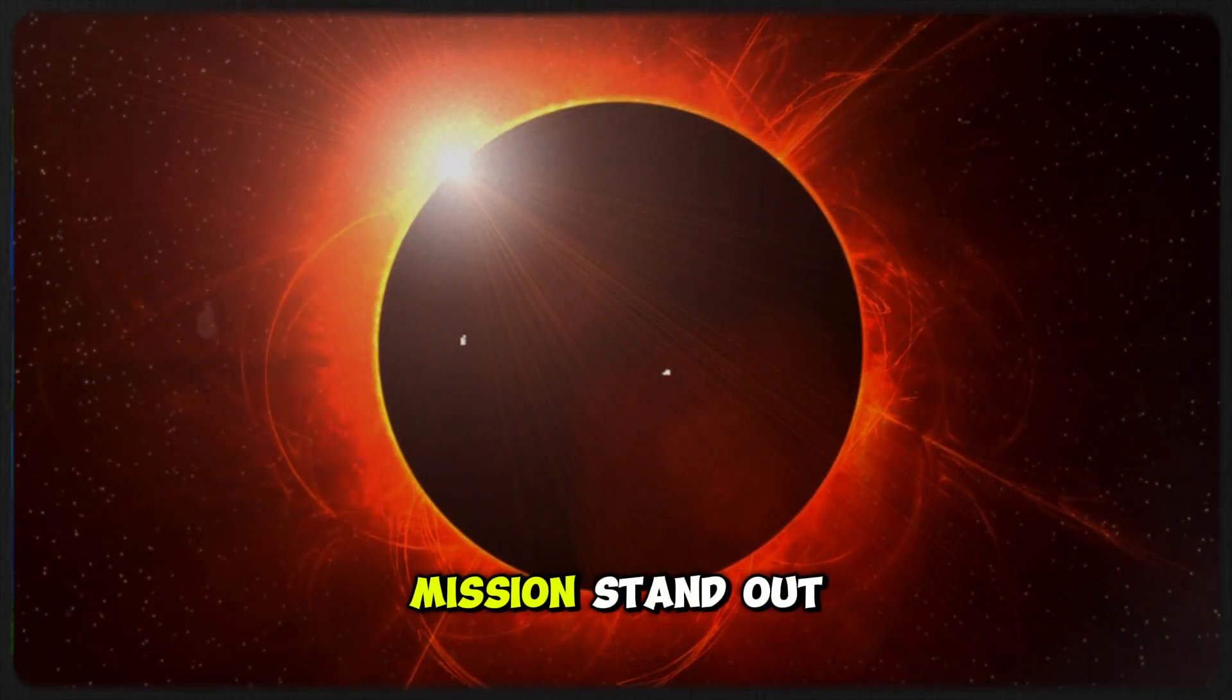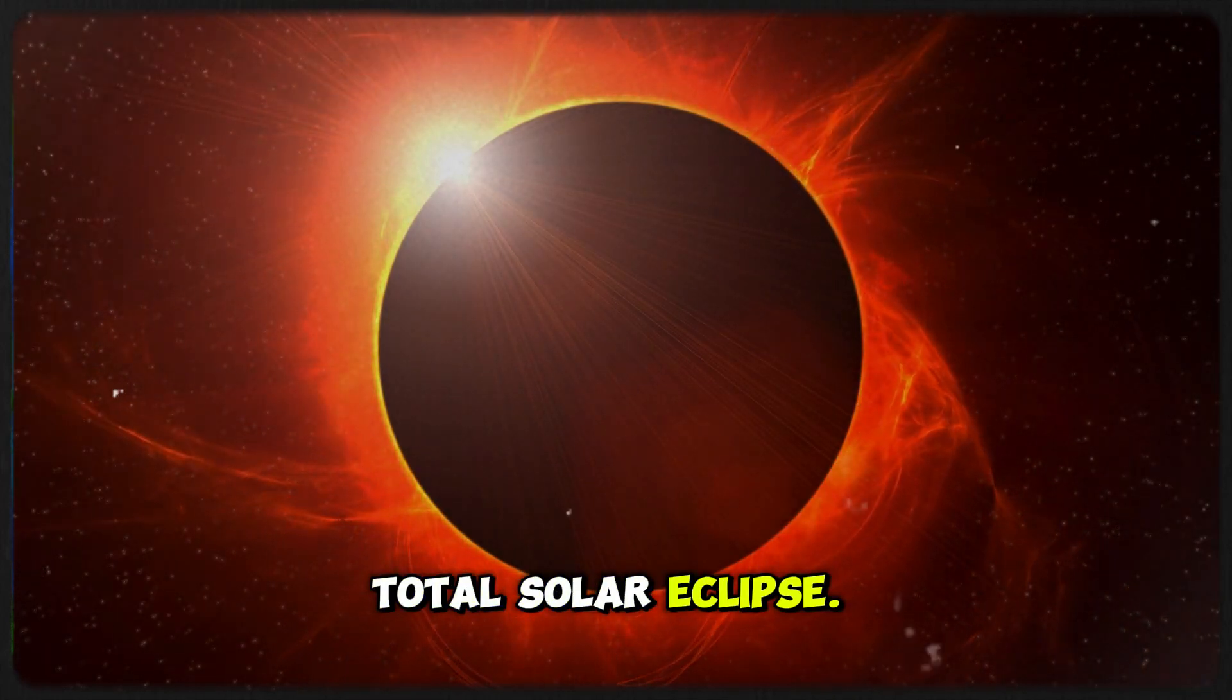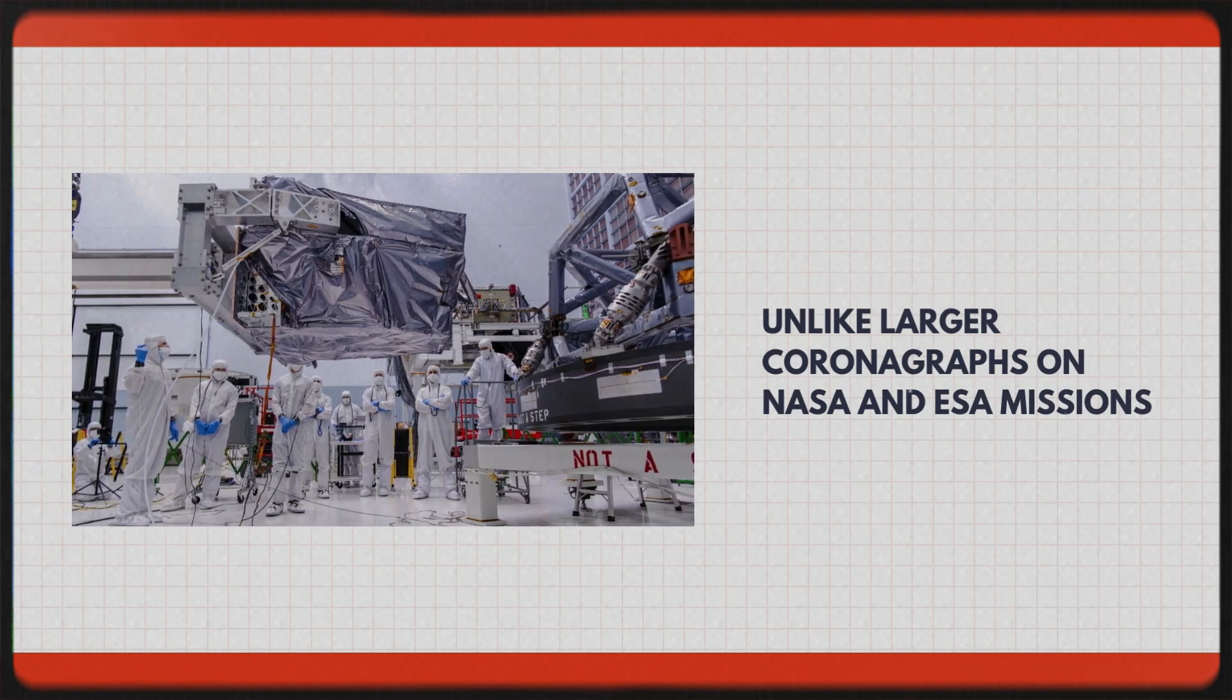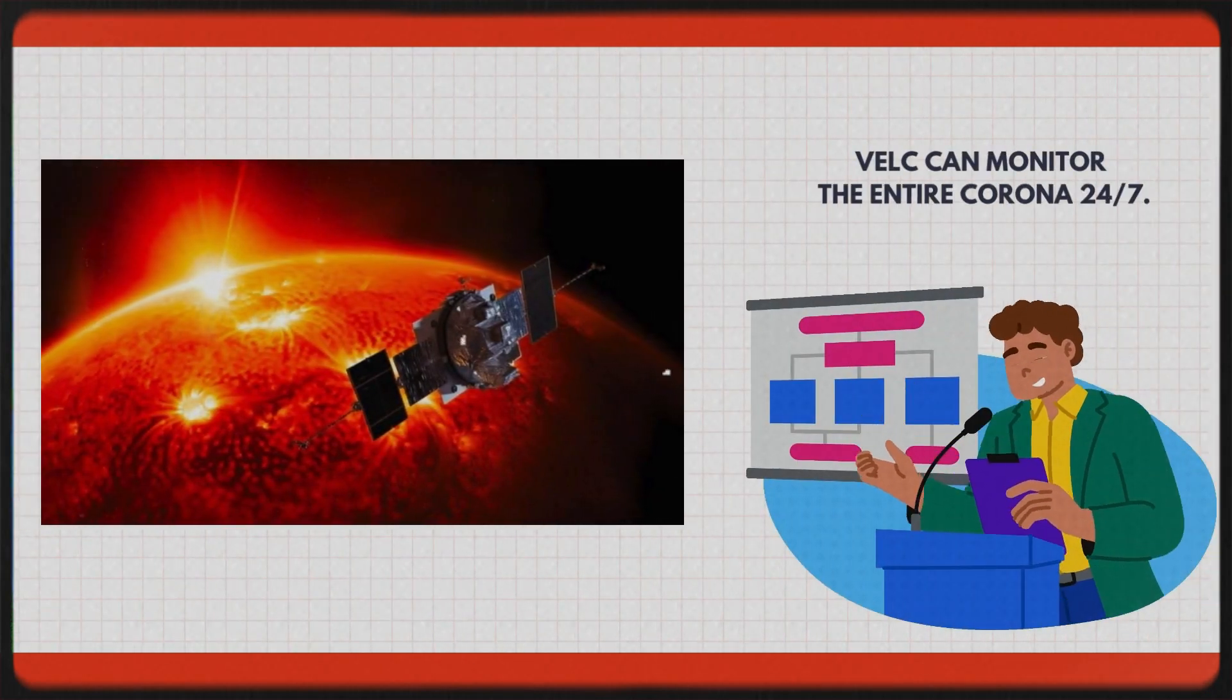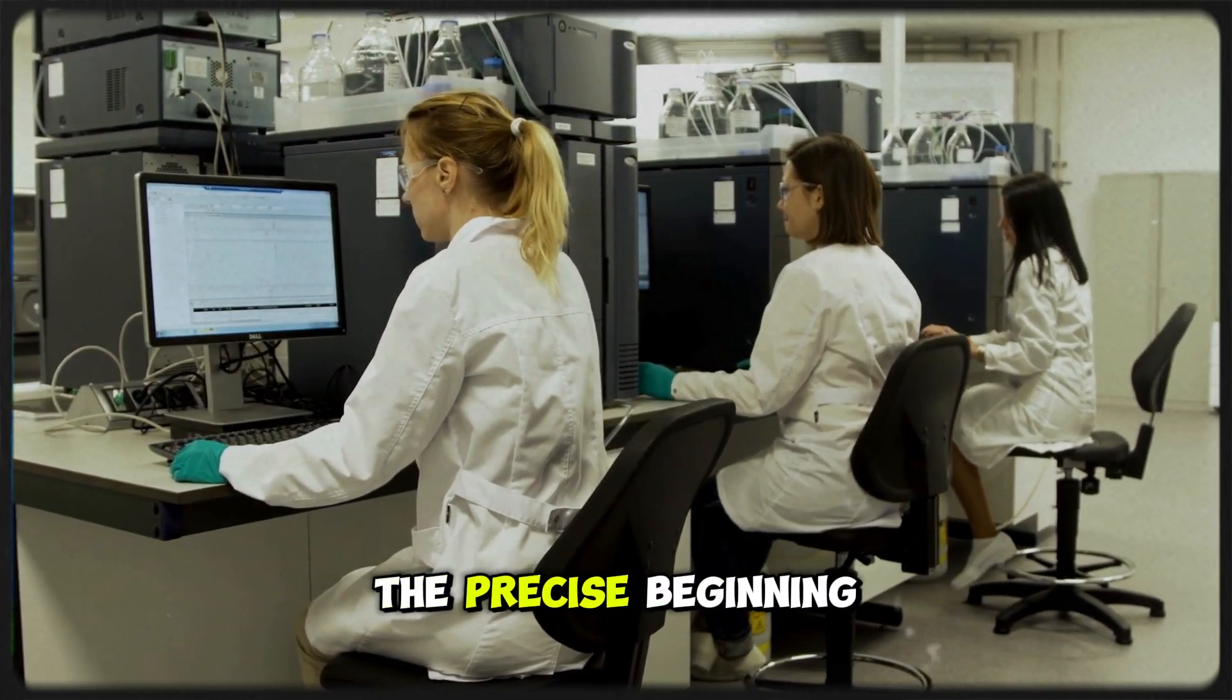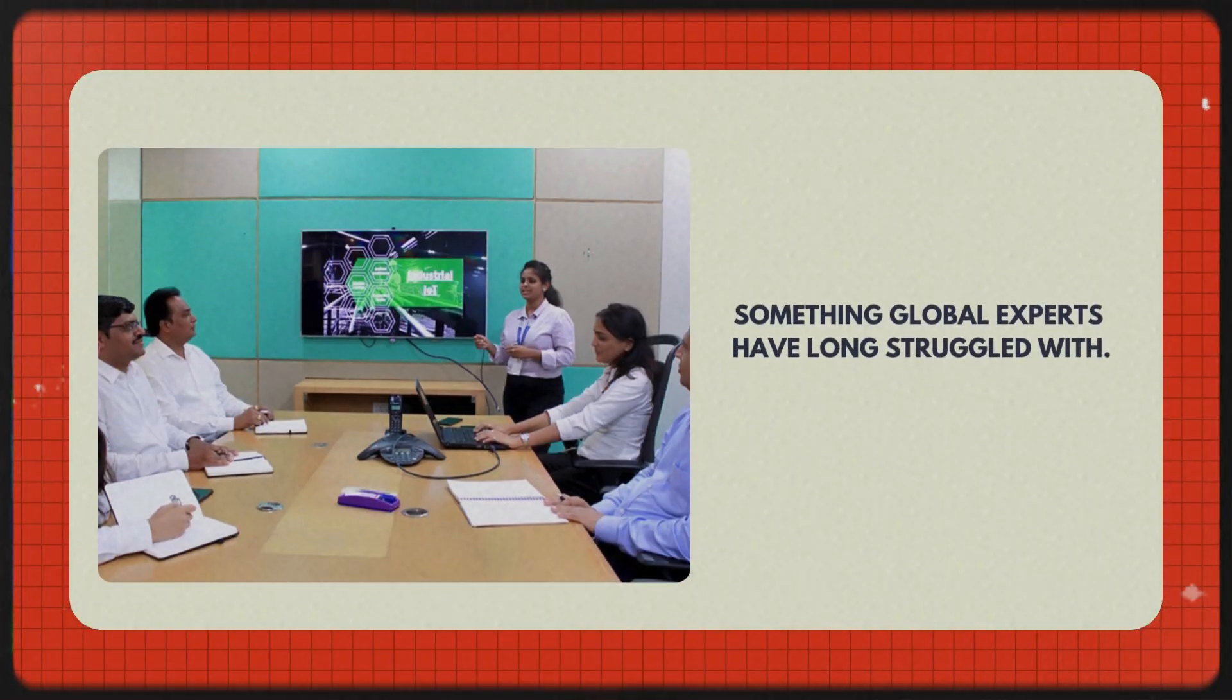What makes India's mission stand out is VELC's ability to mimic a total solar eclipse. Unlike larger coronagraphs on NASA and ESA missions, which obscure parts of the sun's corona, VELC can monitor the entire corona 24/7. This allows scientists to detect the precise beginning of a CME and its trajectory, something global experts have long struggled with.